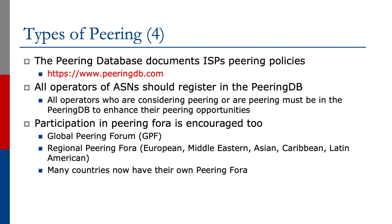The peering database documents ISP peering policies and you can reach it through the URL peeringdb.com. All operators of autonomous systems are advised to register their details in the PeeringDB, even if the operator is not currently at an Internet exchange point. This gives the AS visibility within the peering community, and should the operator come to an exchange point in the future, the entry is visible in the PeeringDB and can be updated as required. Participation in the peering fora is also strongly encouraged.